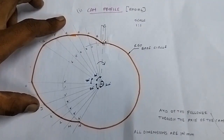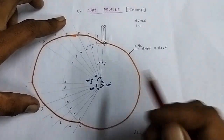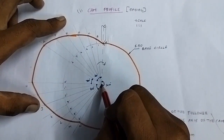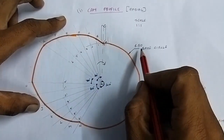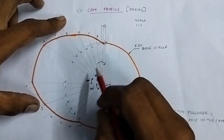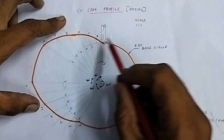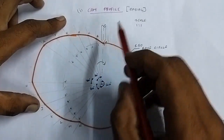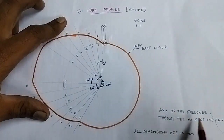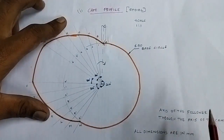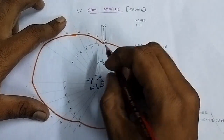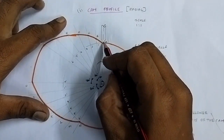Now coming to the cam profile. With O as the center, draw the base circle with 50 mm radius. This is the radial cam, so the axis of the follower passes through the axis of the cam — they share the same right axis.